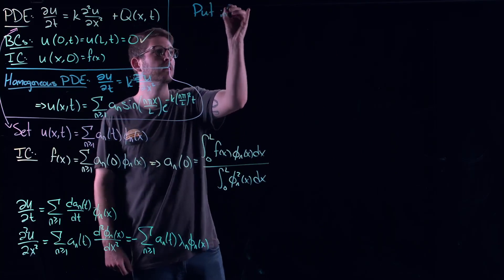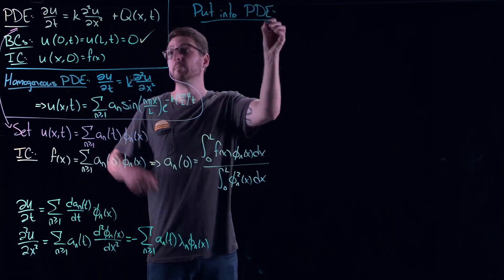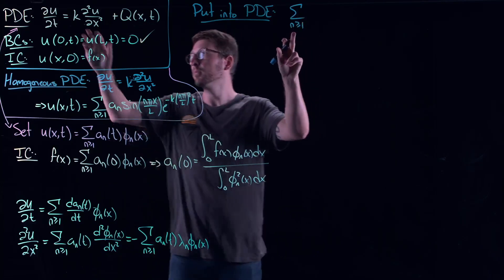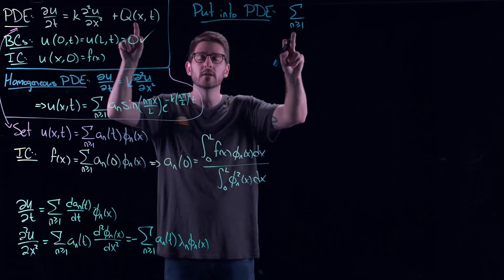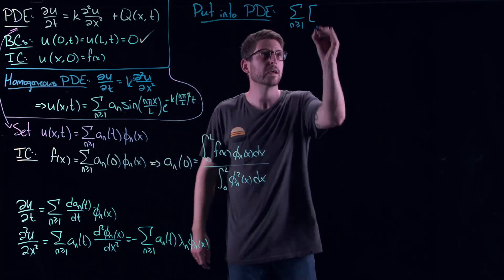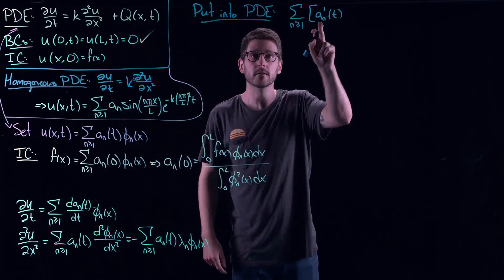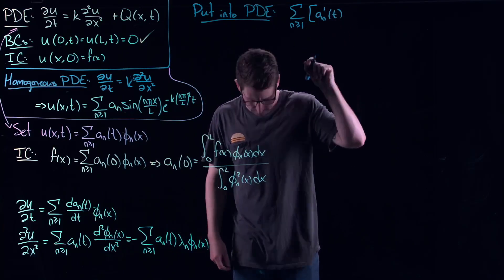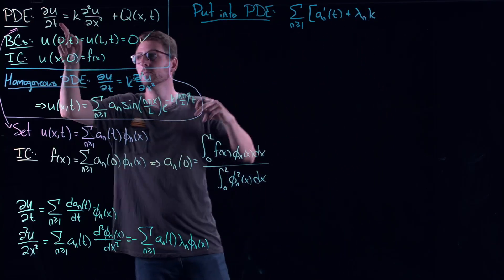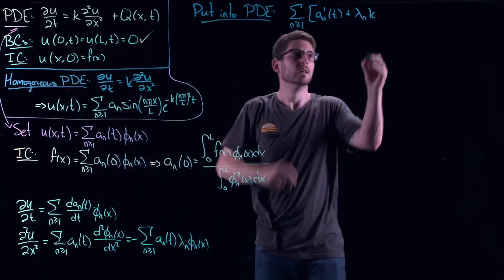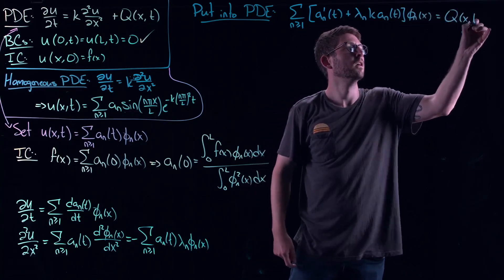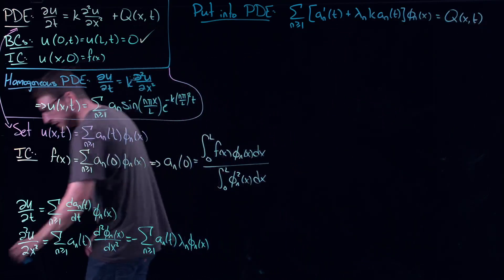Let's put this into the big PDE. I pull everything onto one side and leave q on the other side. Organizing by their eigenfunctions, I get the summation: [a_n'(t) + λ_n k · a_n(t)] φ_n(x) = q(x, t). The minus sign from the spatial derivative cancels and becomes a plus, so I get a plus here. The question is how do I solve this?